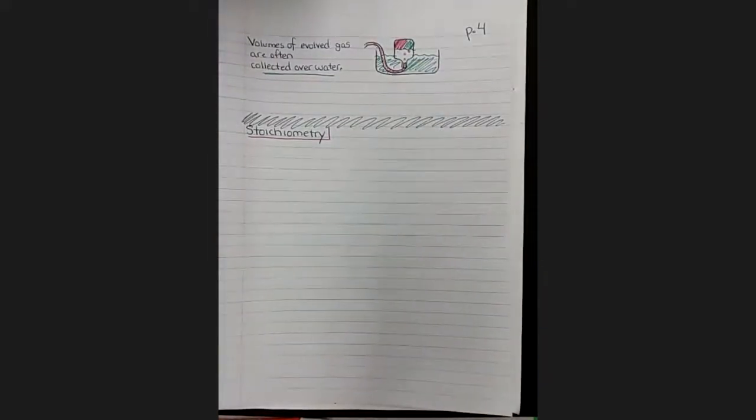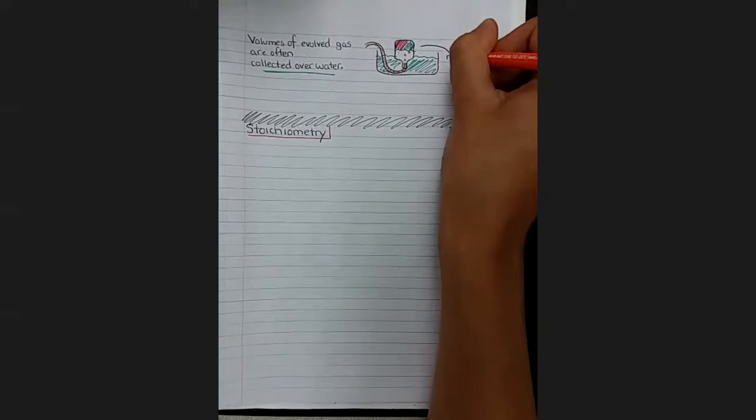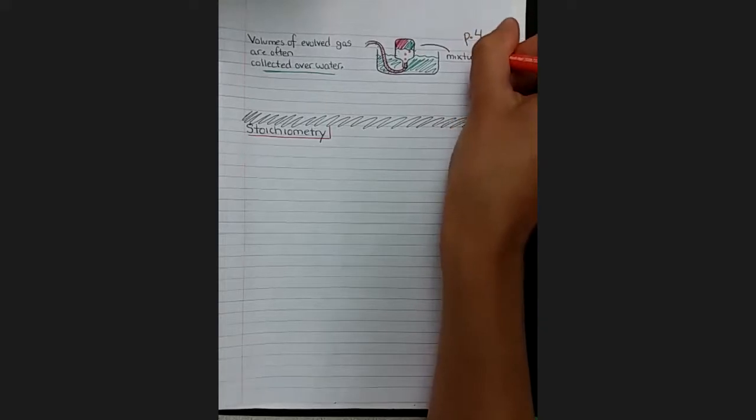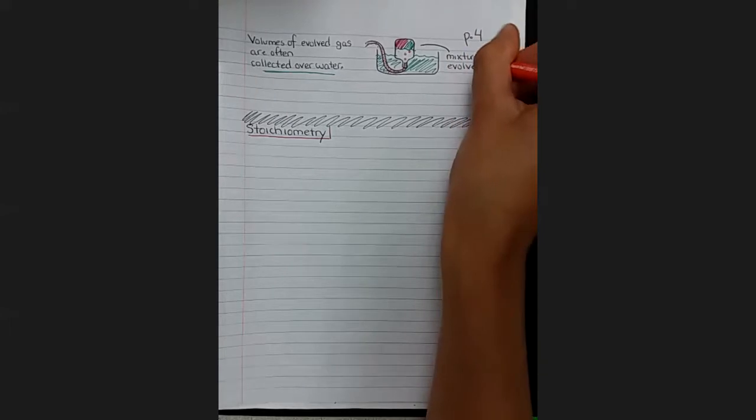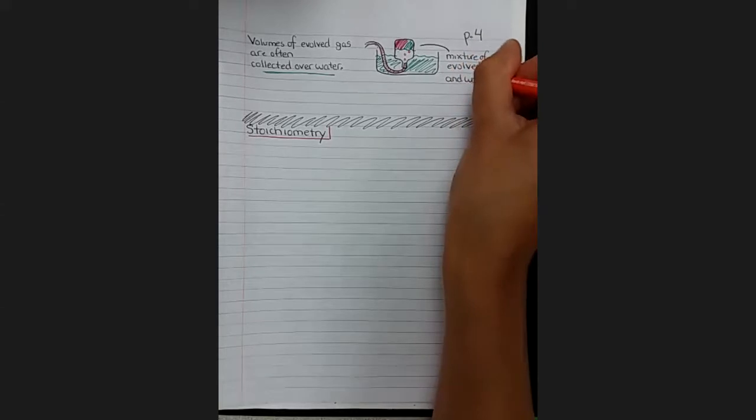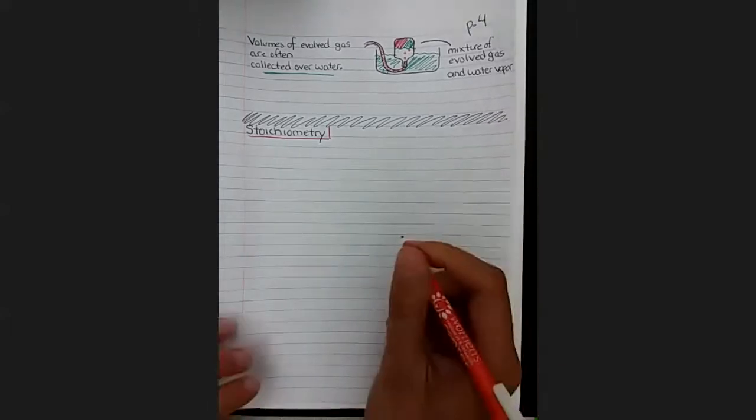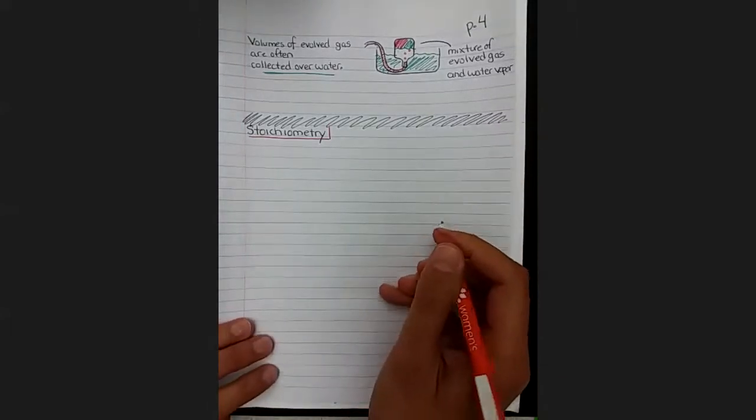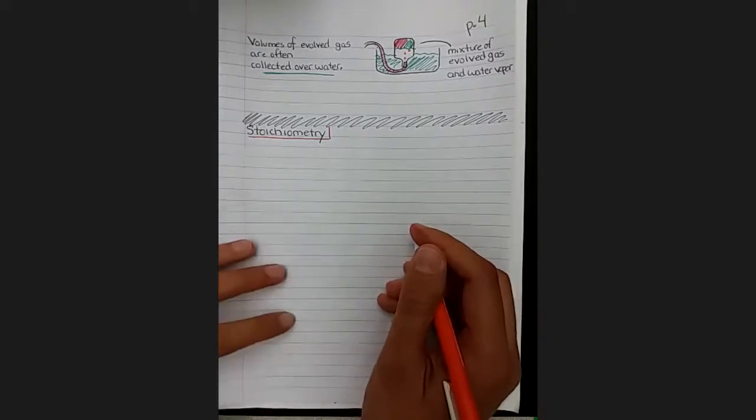Some of the water as a liquid will evaporate as a gas and fill some of that space as well. So this is a mixture. The gas is a mixture of evolved gas and water vapor. But never fear. Water is one of the most well studied chemicals on this planet. So we happen to know quite a lot about water. So we have reference tables that can help us out here.